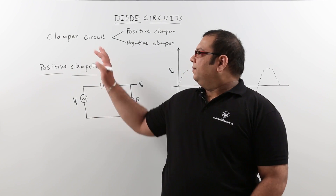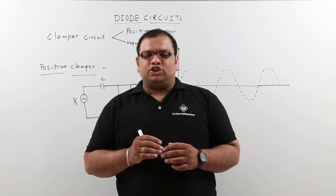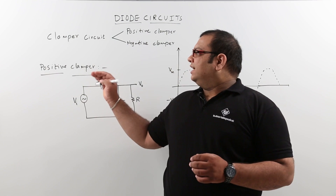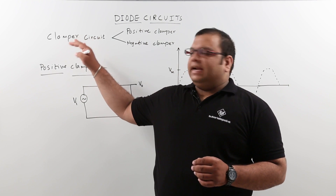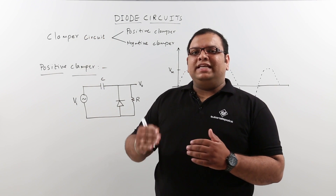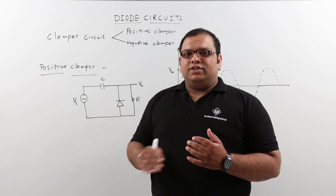Hi friends, now let us discuss about clamper circuits in the diode circuits topic. A clamper circuit is a circuit which will restore the DC value of an AC waveform.